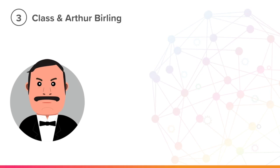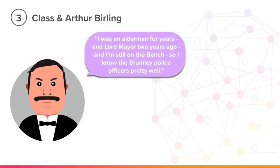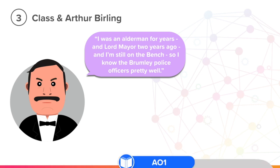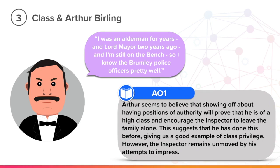Let's look at how the theme of class relates to Arthur Birling. Just after the inspector's entrance in Act 1, Arthur says, 'I was an alderman for years and Lord Mayor two years ago and I'm still on the bench, so I know the Bromley police officers pretty well.' This is an important quote because Arthur is trying to use his social class to get the inspector's favour. Arthur seems to believe that showing off about having positions of authority will prove he is of a high class and therefore encourage the inspector to leave the family alone. This suggests he has done this before, giving us a good example of class privilege.